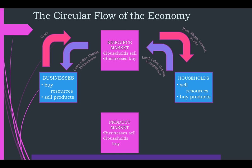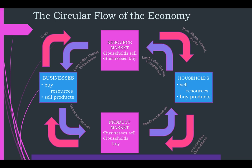In the product market, businesses provide goods and services to households. I make my money, I go out to dinner, see a movie, buy a t-shirt, whatever. And what do households give businesses in return for those goods and services? We give them expenditures — we pay them money. This represents revenues for businesses. So this is the simple circular flow: people go to work, provide their resources, get paid, and then spend that money back with businesses in exchange for goods and services.